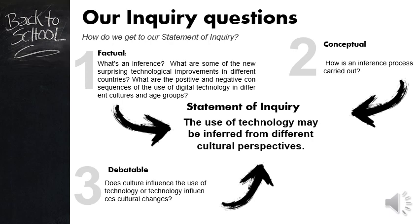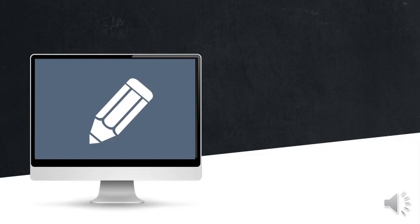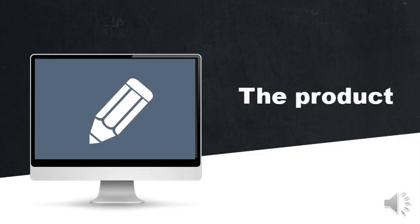Reflect a bit about these questions now — which ones have we already answered? But how are we going to evidence that we have carried out all this process? With a product that will be a blog. In this blog, you will have to write analyses of a text, a video, and a cartoon, all of them related to technology. With this tool, we will exercise the skill of research and media literacy: interacting with media to use and create ideas and information.